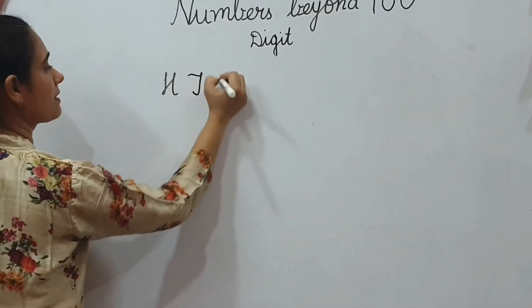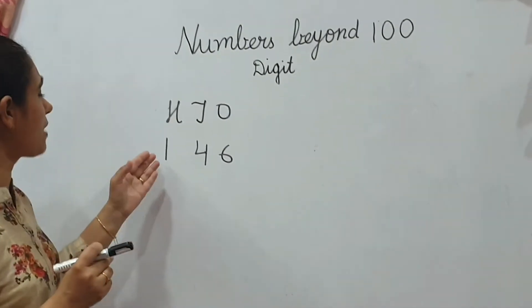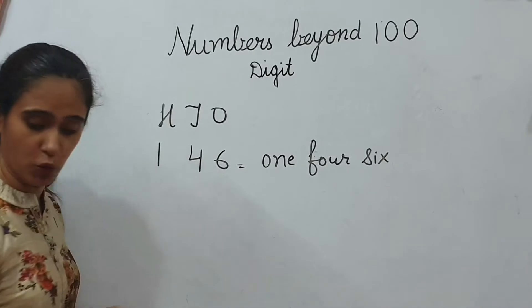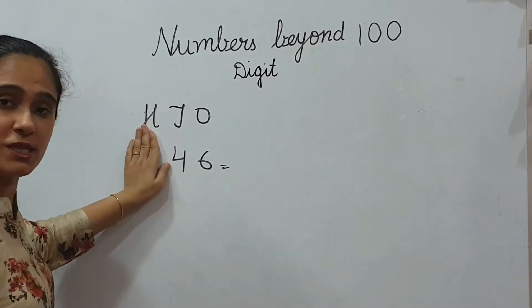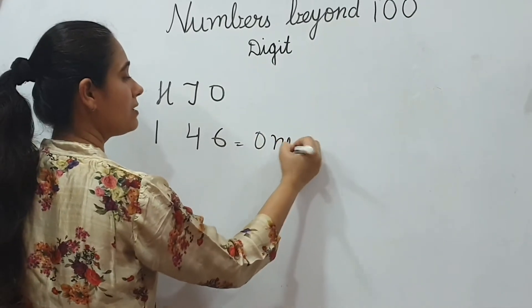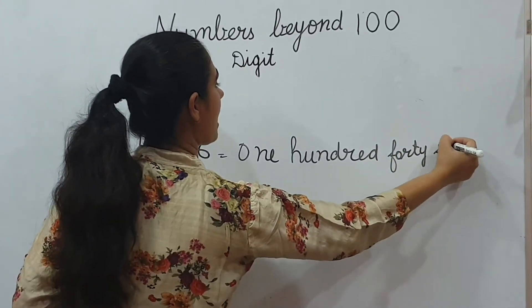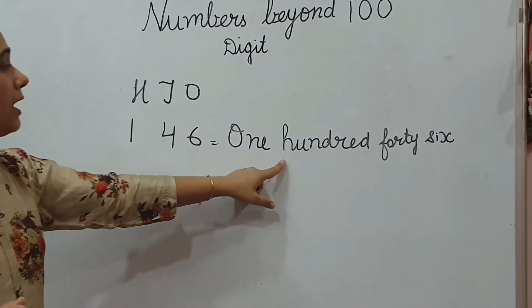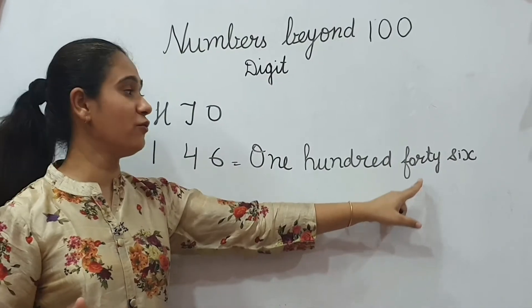Like, I have written 146. 1, 4, 6. No, is this 1, 4, 6? No. This is not 1, 4, 6. How we will speak this? What is this? 46, 6. And I have written 1. 1 is 100. So, how I will speak? 100, 46. 146. We will write, first letter should be capital. O-N-E, 100, H-U-N-D-R-E-D, F-O-R-T-Y, 46.